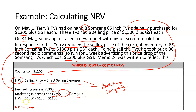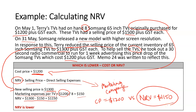To calculate NRV, we take the new selling price — what we estimate we can get — and we minus the direct selling expenses. So the cost price is $1,200 versus the NRV of $1,150. We can see that NRV is lower. Therefore, we need to perform what's called an inventory write down to move the items from their cost price in the records to their net realizable value.